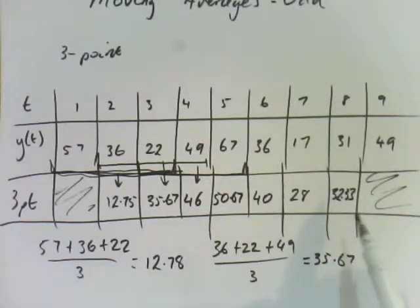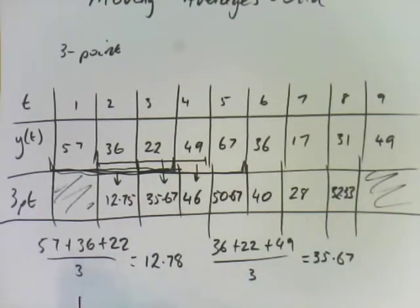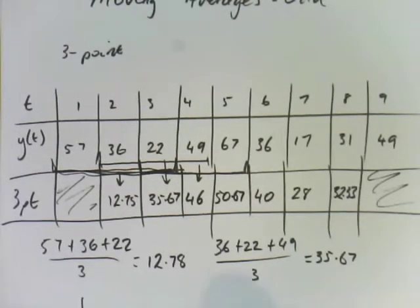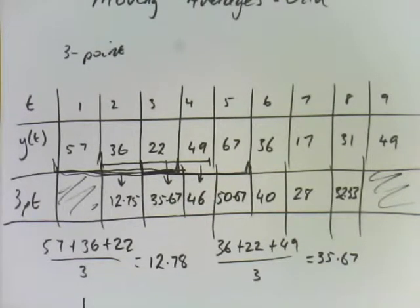Okay, so there we are back now. So if I plot these on a graph, it will come back, and you will see that the original time series will look something like this. Whereas my three-point moving average one, hopefully, will look a little bit flatter than that.